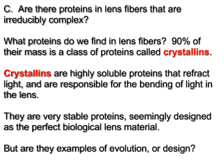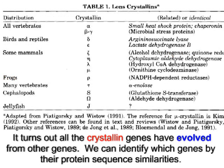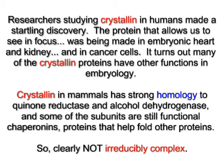But are they examples of evolution or design? It turns out all the crystallin genes have evolved from other genes — we can identify which by their protein sequence similarities. Researchers studying crystallins in humans made a startling discovery: the protein that allows us to see and focus was being made in embryonic heart and kidney and in aggressively growing cancer cells. It turns out many of the crystallin proteins have other functions in embryology.